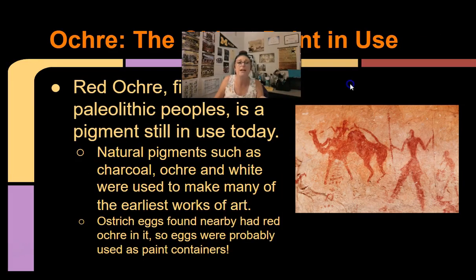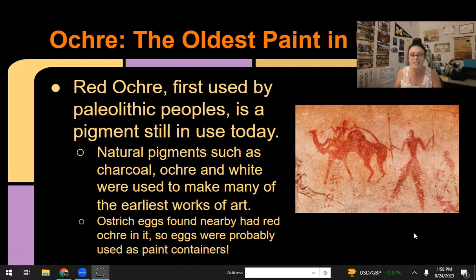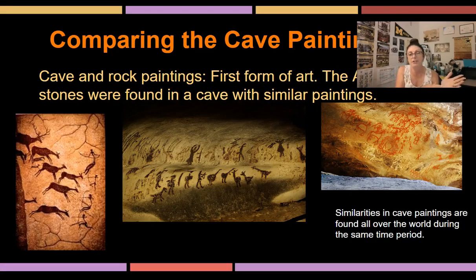Red ochre is one of the earliest types of paint we see, especially in cave paintings — it's pretty vibrant. These people used what they had in nature around them. Interestingly, ostrich eggs were found alongside cave paintings in Africa, broken in half with red ochre inside, meaning they were probably using the eggs as a paint container — almost like a palette. It's remarkable that they were that innovative.